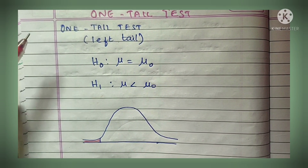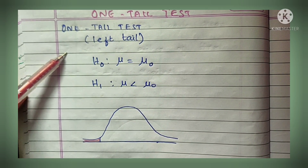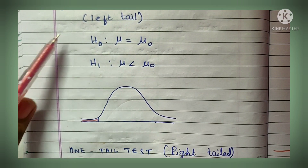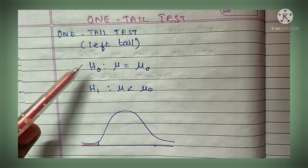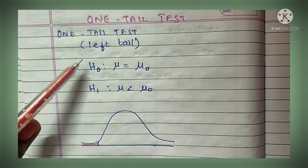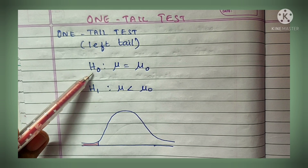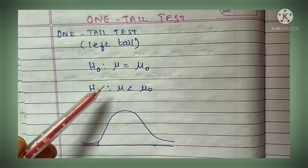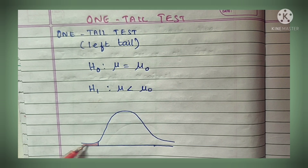Next, we will see the one-tail test. In a one-tail test, you have a left-tail test and a right-tail test. For the one-tail left-sided test, H0: μ = μ0 and H1: μ < μ0 - that is why it is on the left side, in the negative direction.